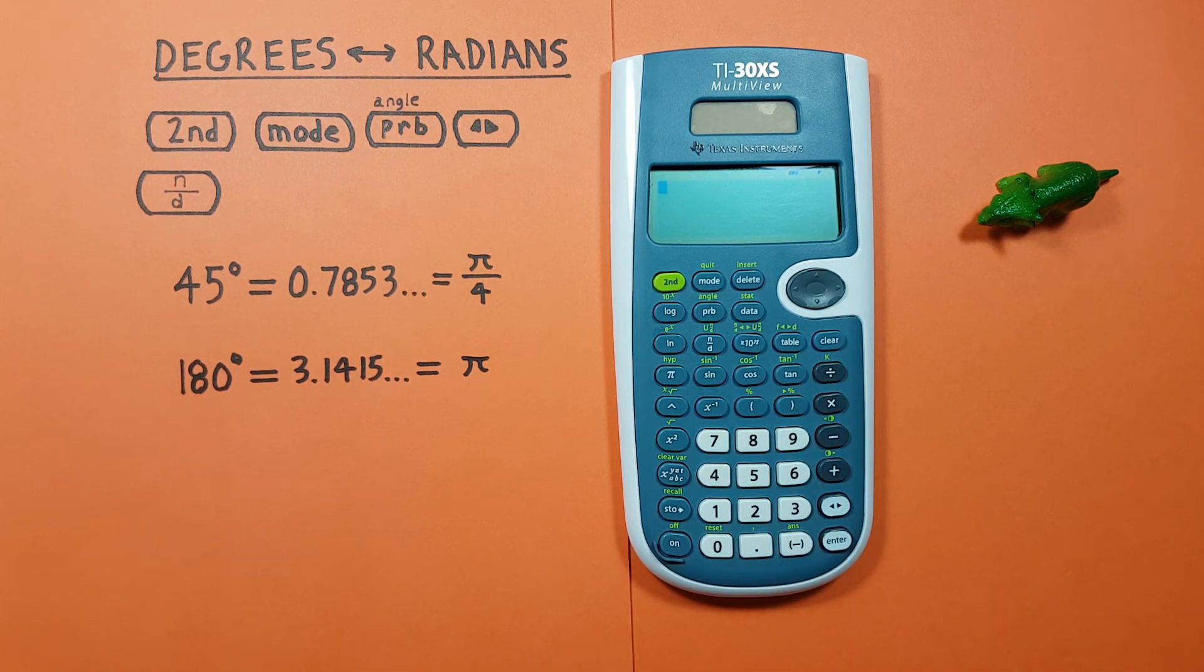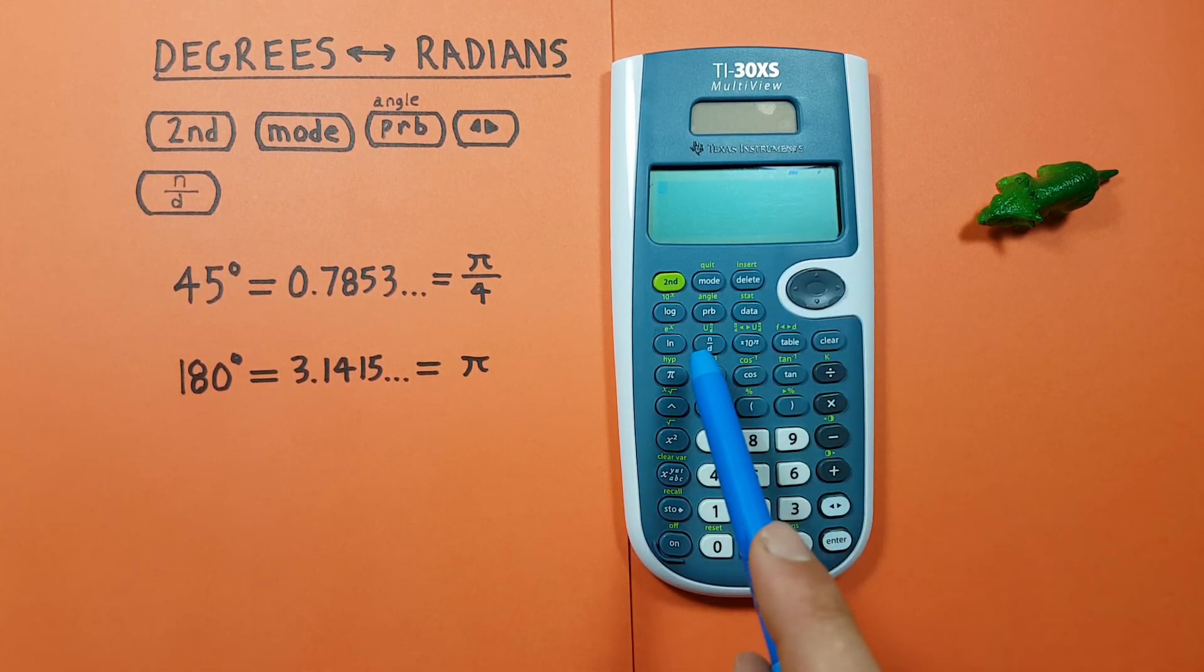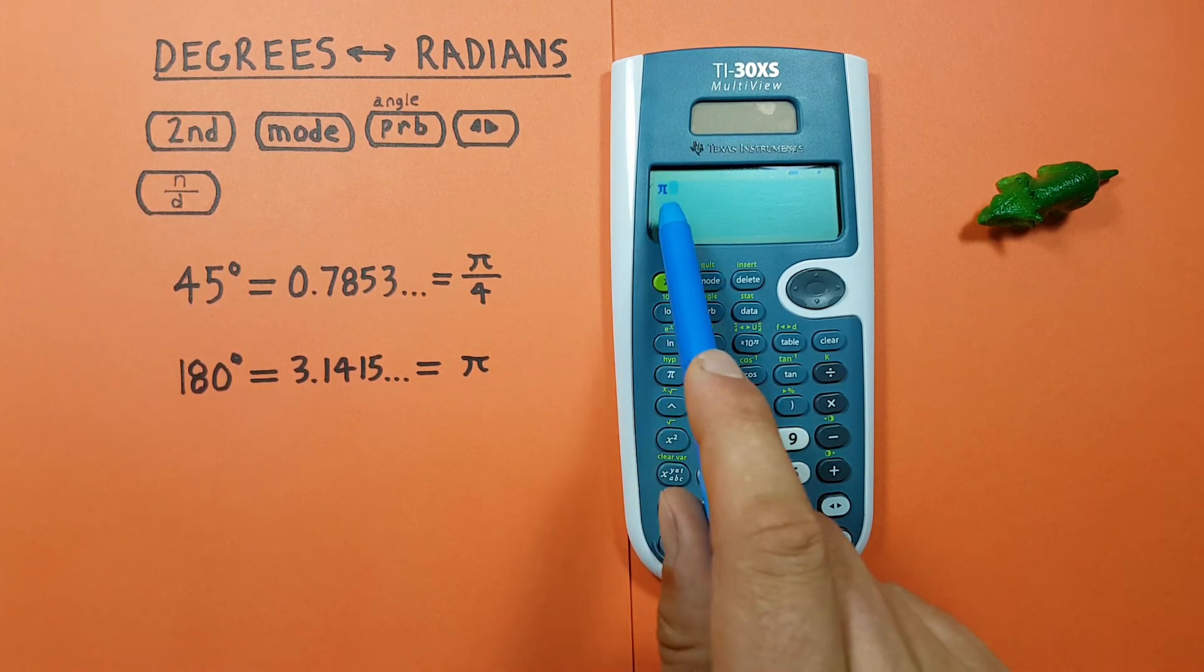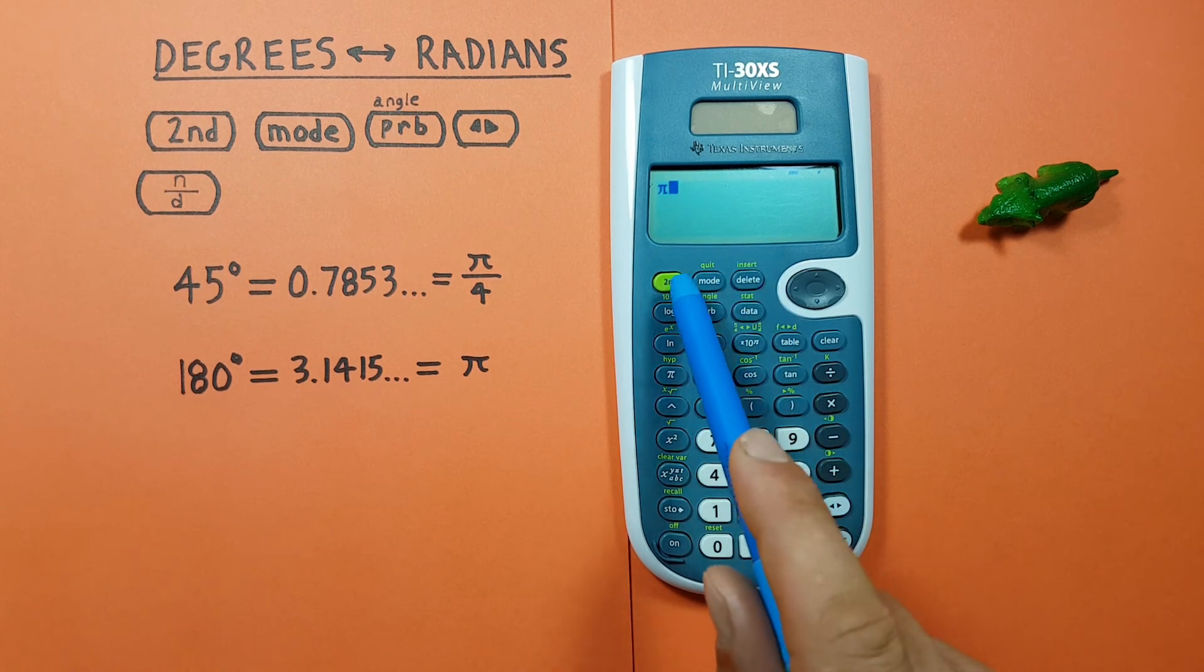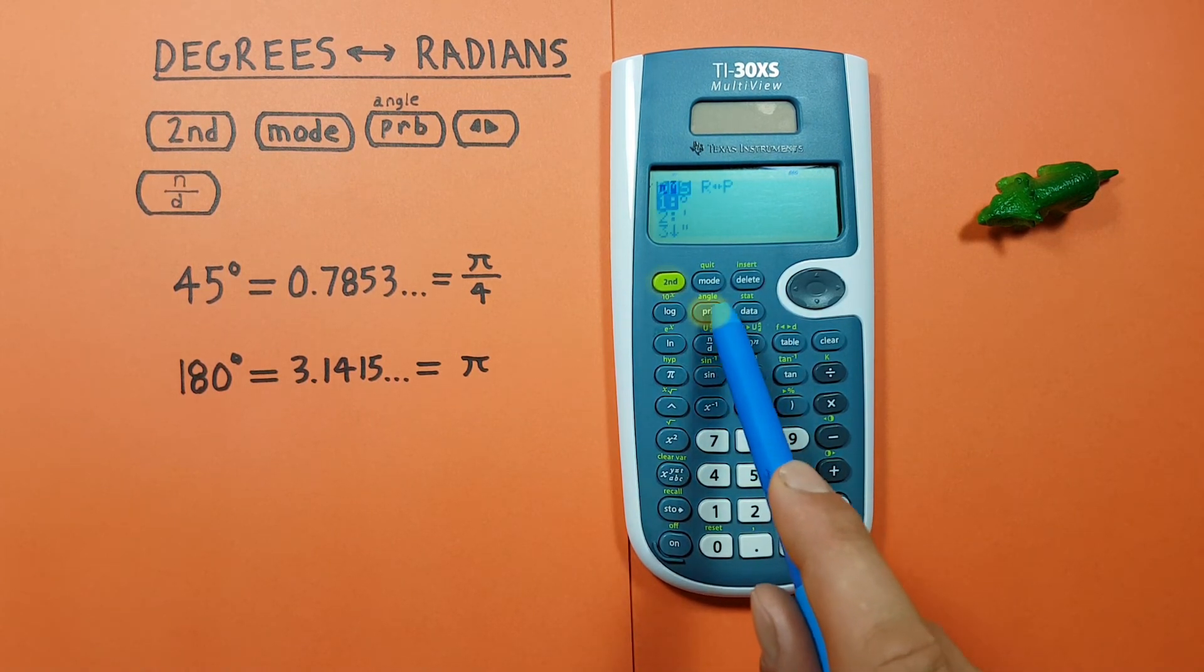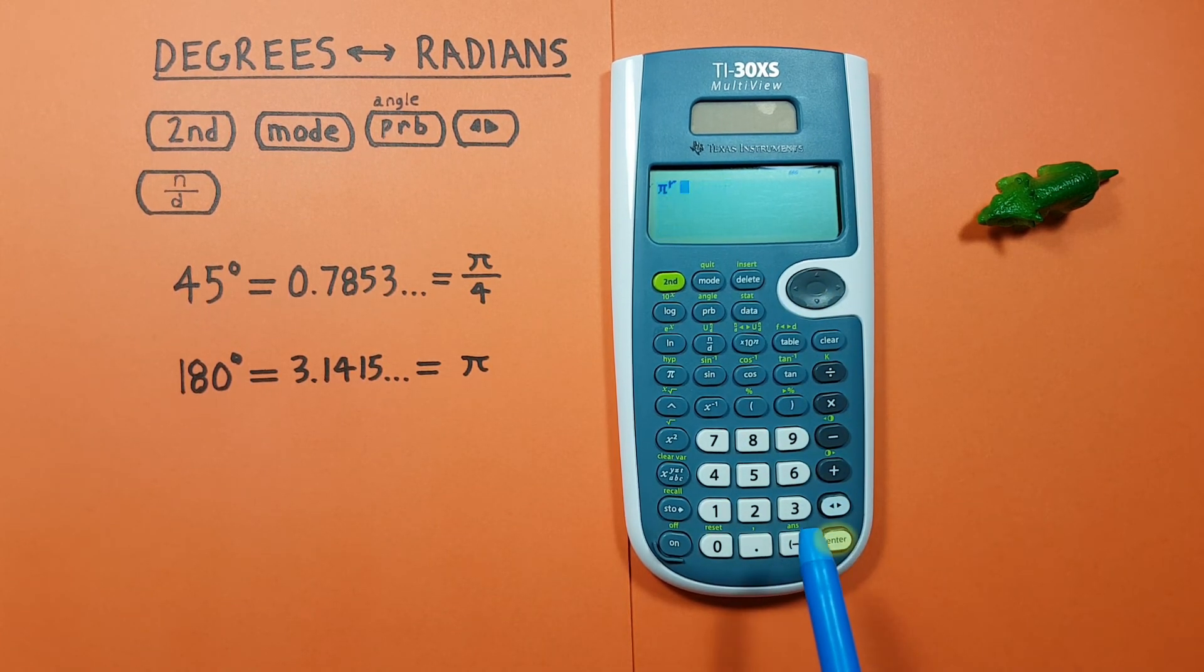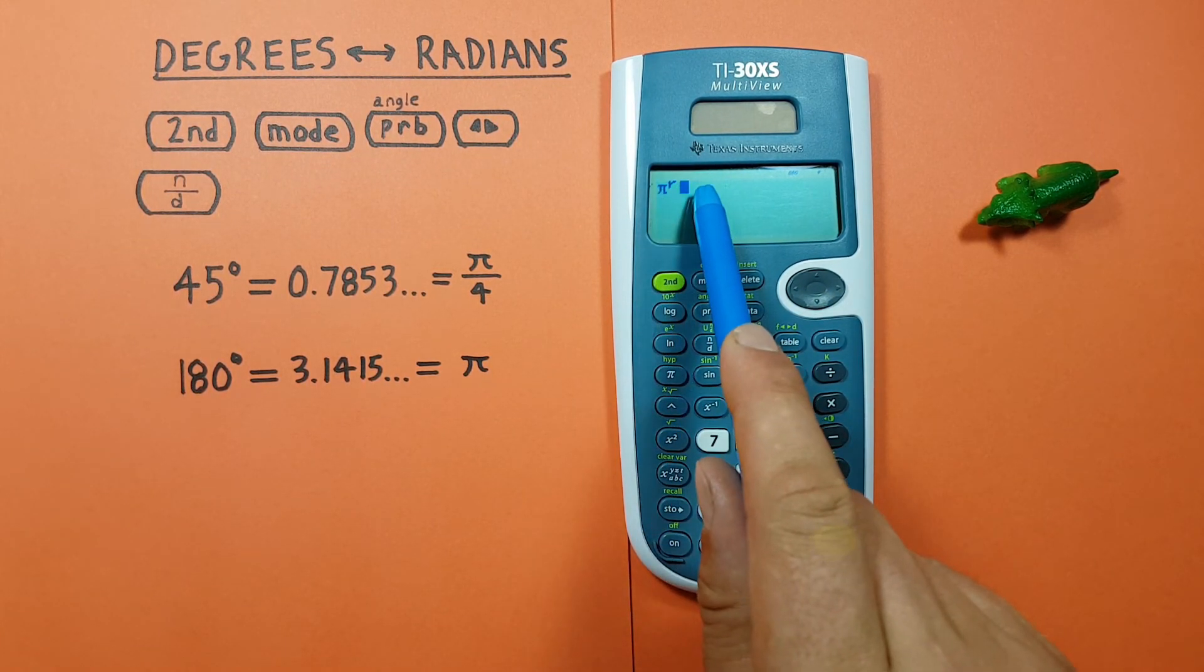Our other example, if we want to get pi in degrees, since we're already in degrees mode again, all we have to do is press pi, and then tell our calculator this is radians. So we go second, PRB, scroll down to number 4 there, the radians.